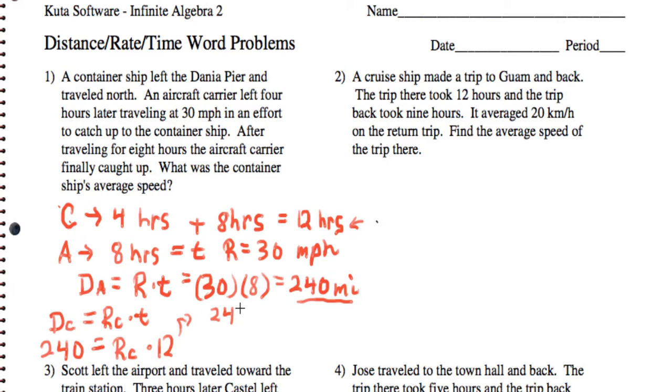That's 240 equals R times 12. We'll divide both sides by 12. And when we actually solve that out, we're going to get a rate of 20 miles per hour. And that's how fast the container ship goes. So that's problem number one.